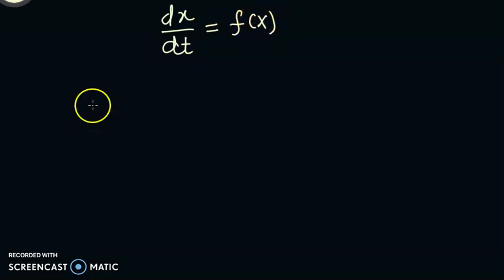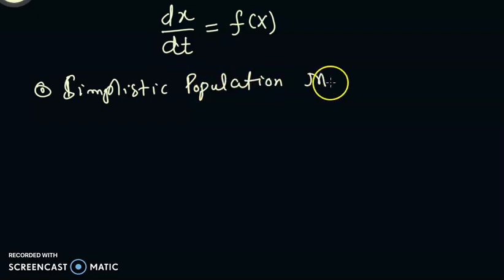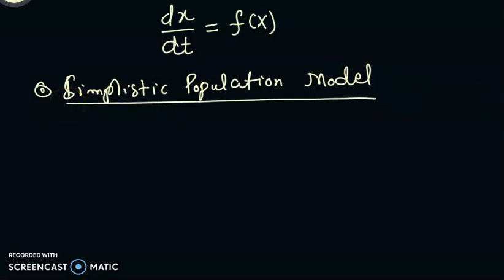I'll get back to the previous two videos where we discussed the simplistic population model. What was that? It was dx/dt = ax.